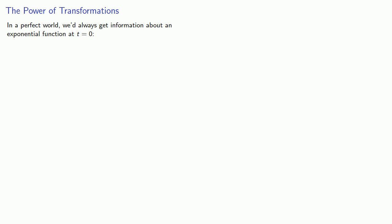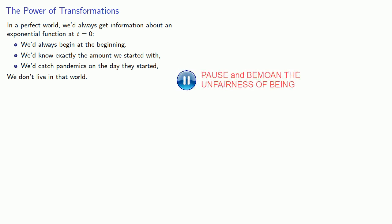In a perfect world, we'd always get information about an exponential function at t equal to zero. We'd always begin at the beginning. We'd know exactly the amount we started with. We'd catch pandemics on the day they started. We don't live in that world, but we can use transformations to bring us there.